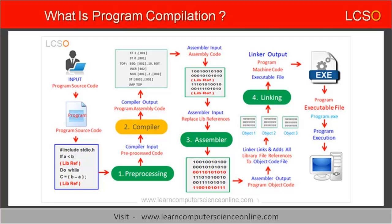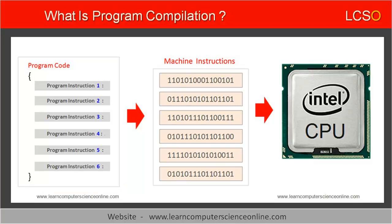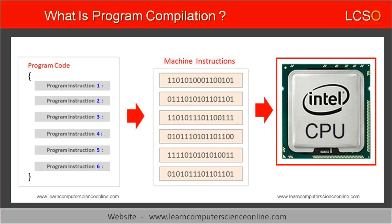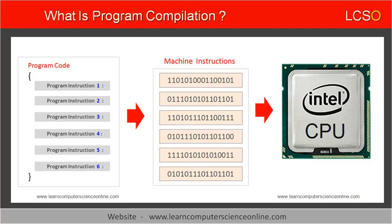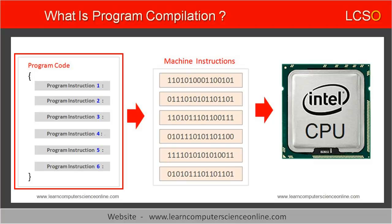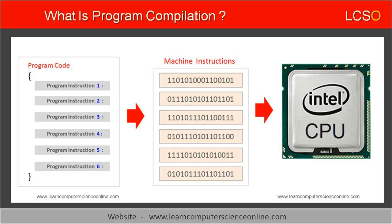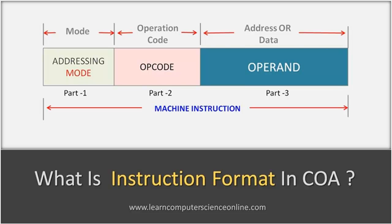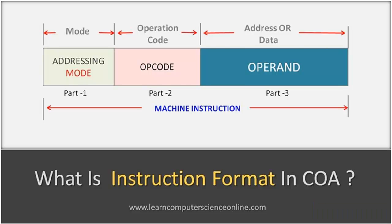Let us now discuss the four stages of the compilation process. The program compilation process is a complex and multi-stage process. The programmer writes the program code as per the programming language syntax; however, the computer cannot directly execute any high-level program. A compiler is a special system software used to translate the high-level program source code file into low-level machine code. The machine code consists of machine instructions in binary, encoded by the compiler in a specific format called the instruction format. The processor CPU can decode the machine instruction as specified in the instruction format.